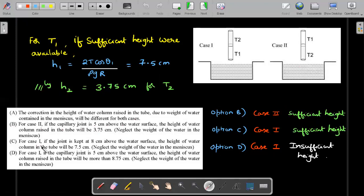And for case one, if the joint is kept at eight centimeters, eight centimeters is well above this 7.5 stuff. So even in option C case one, it is sufficient height. Therefore, height risen will be up till 7.5 cm. Points to note is in brackets of these two. And the third option, he mentions neglect the weight of water in meniscus, which means this formula is valid, no need to correct these values.